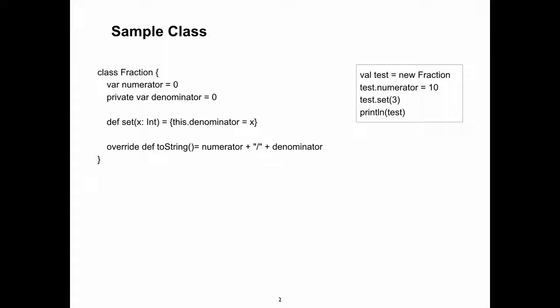Now, classes — not so important for Spark, but they do some interesting things. I can create a class that looks pretty similar to a Java class. I give it a couple of fields and methods — for example, a toString method. Then I can create a new fraction, there's no 'new' keyword needed, and I can start doing standard operations with it.